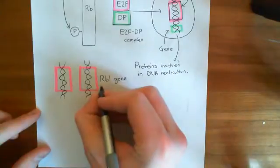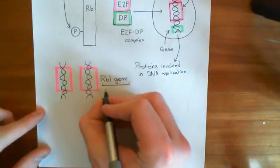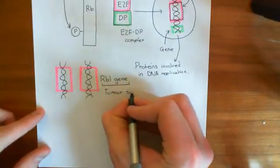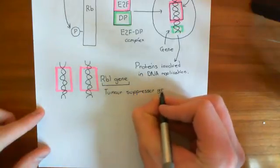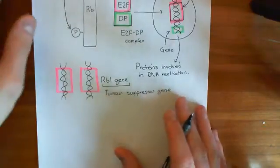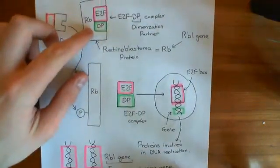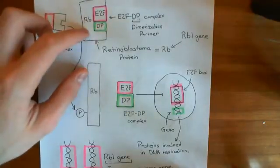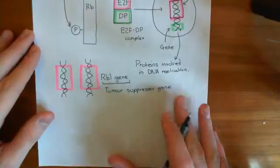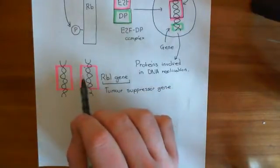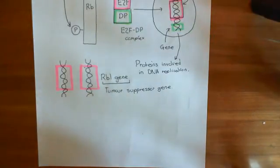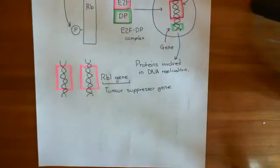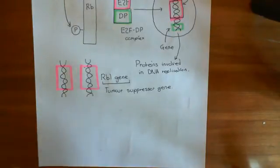The RB1 gene is an example of a tumor suppressor gene. The protein coded for by the RB1 gene basically stops cell division — its role is to stop cell division, not promote it. Tumor suppressor genes are genes which you need a loss of function in order to lead to cancer. Contrast that to proto-oncogenes: proto-oncogenes are genes in the genome which promote cell division — for instance, cyclin D would be a proto-oncogene.